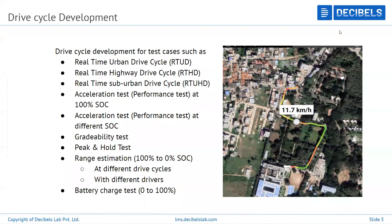How do you develop a drive cycle? Using all the data acquisition systems, you select a route and identify the test cases required. For example, test cases vary based on your application — whether you're making a performance-oriented sports bike, a commuter electric two-wheeler, or a passenger EV car. There are standard test cases that ARAI and global organizations perform, but there are also real-time test cases you'd encounter in day-to-day life based on your application.